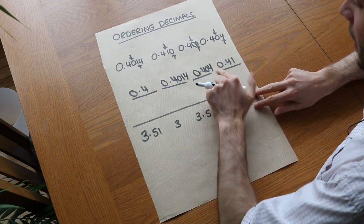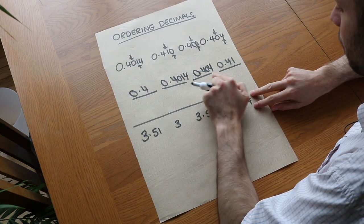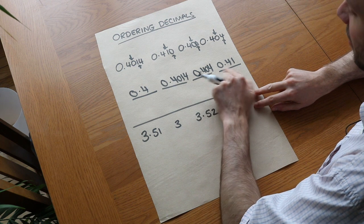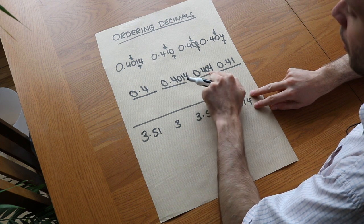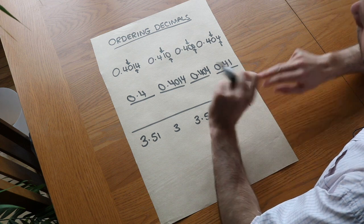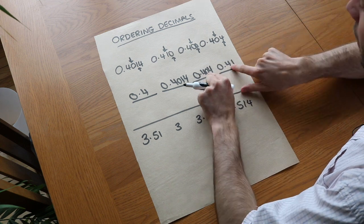And a mistake that students sometimes make is they think the 0.404 is bigger than 0.41 because they think well 404 is bigger than 41, but you can't compare the numbers in that way, you have to check the place value.